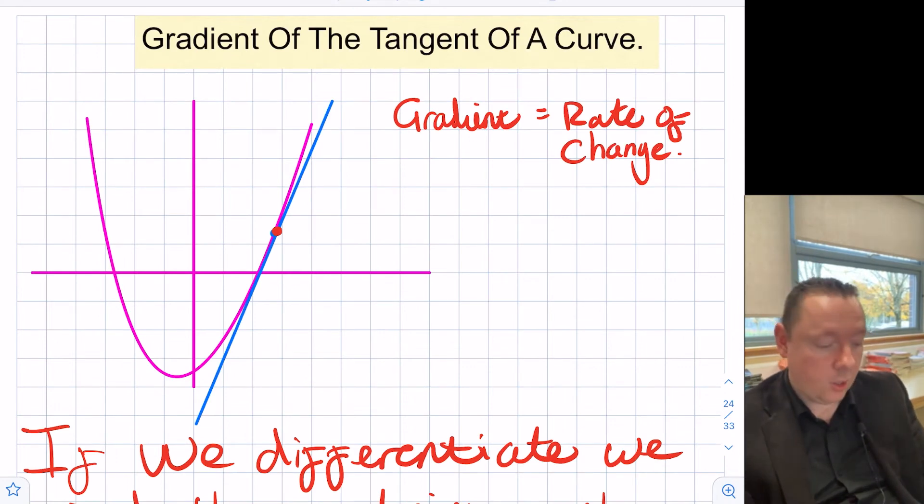Last thing I'm going to look at today is the gradient of the tangent to a curve. If I draw a curve here, we know that we can find the gradient at a specific point and that gives us, we can draw a tangent, a line that just touches that point.